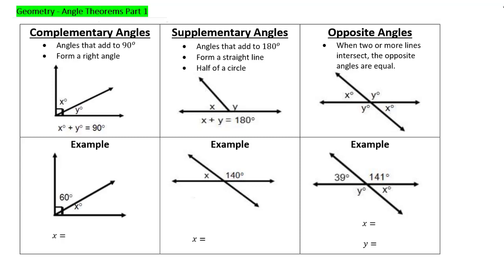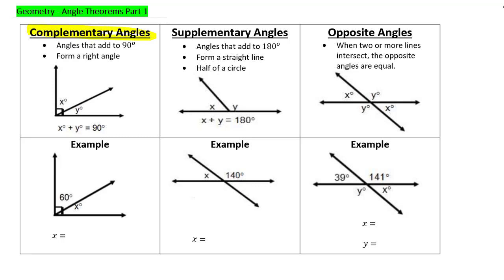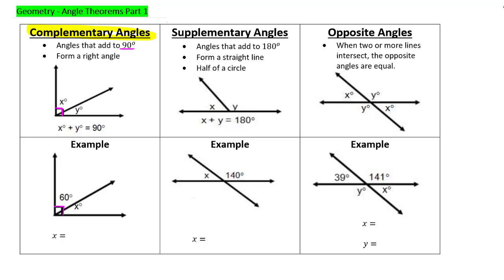The first one is called complementary angles. This one is pretty obvious to spot because whenever you're dealing with complementary angles, there's a 90-degree angle. We usually have a little box drawn in the corner. As soon as you see that, you know it's 90 degrees. The two angles on either side have to add to make 90 degrees — no matter what they are. You could have more than two angles; they still all have to add to make 90.